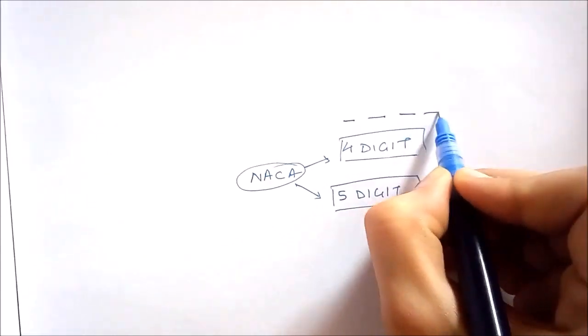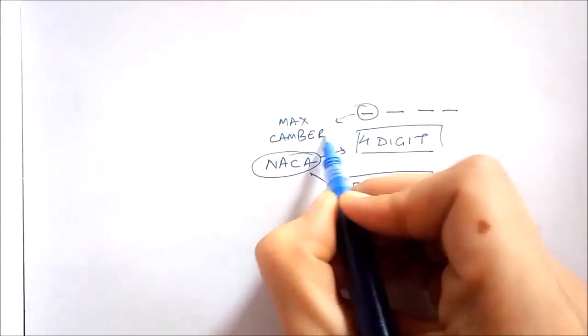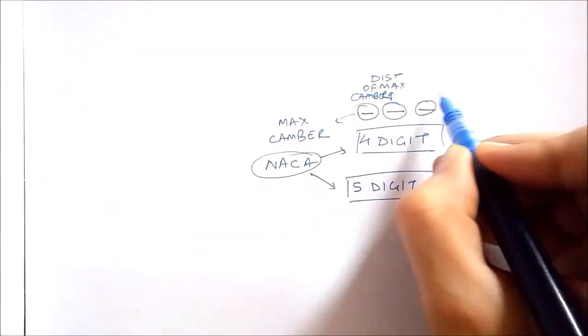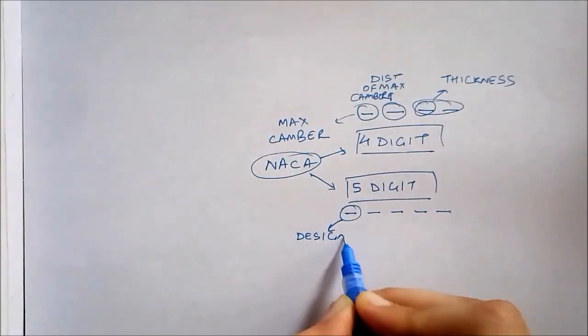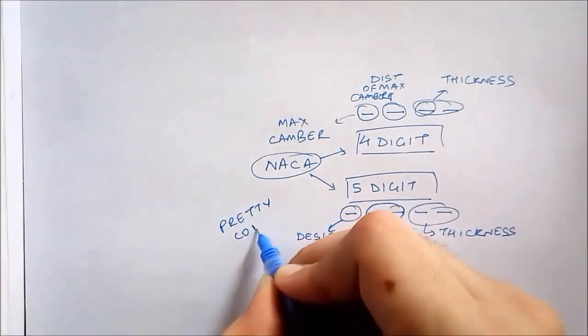For five digits, the first digit gives design lift coefficient when multiplied by 0.15, the next two digit gives the distance of maximum camber when divided by 2 and last two gives maximum thickness. Pretty interesting stuff, right? I'll leave that to you.